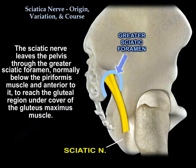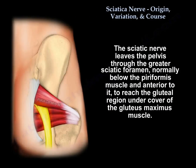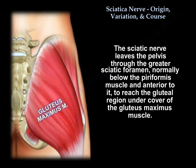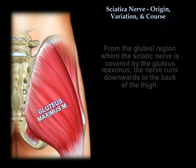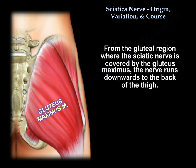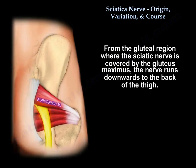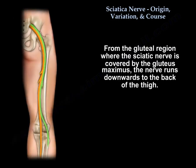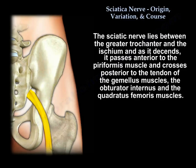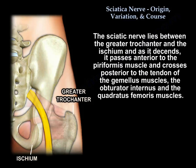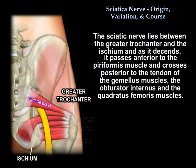The sciatic nerve leaves the pelvis through the greater sciatic foramen below the piriformis and anterior to it, to reach the gluteal region under cover of the gluteus maximus. From the gluteal region, the nerve runs downward to the back of the thigh. It lies between the greater trochanter and the ischium, and as it descends it passes anterior to the piriformis, crossing posterior to the tendons of the gemelli, the obturator internus, and the quadratus femoris.